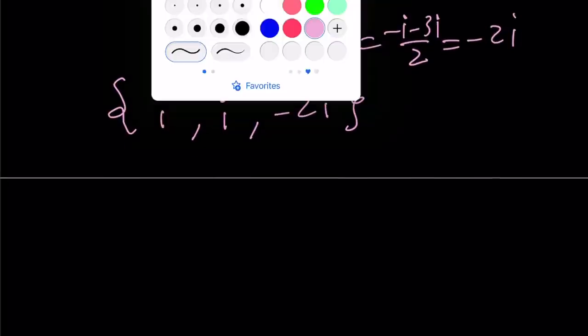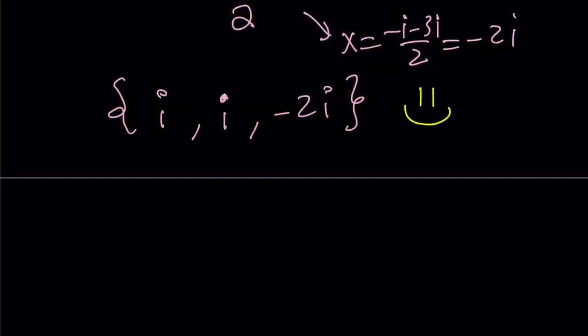We already know that this is a solution, but x equals i just repeats, so the roots are i, i, and -2i. Obviously we are expecting 3 solutions, even though they might be repeating, because it's a cubic equation. This brings us to the end of this video. Thank you for watching, I hope you enjoyed it. Please let me know, don't forget to comment, like, and subscribe. I'll see you tomorrow with another video. Until then, be safe, take care, and bye bye.